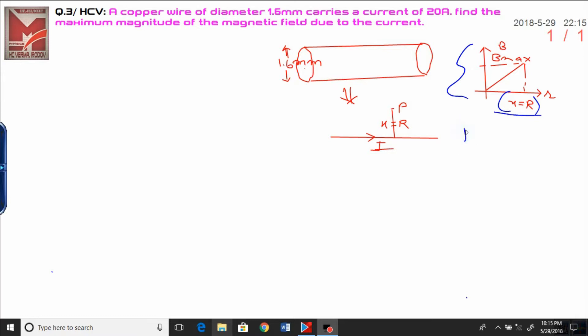Here, diameter is given as 1.6 mm. Then, in order to calculate radius, it will be d upon 2, diameter half of the diameter, 0.8 mm.